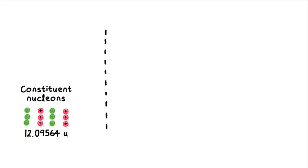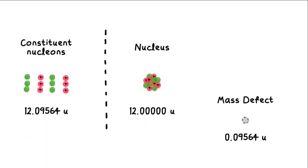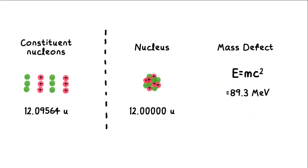What has the missing mass vanished into? This is where the famous equation E=mc² comes in. E=mc² says that mass and energy are really two forms of the same thing. The mass defect has simply been converted into energy.